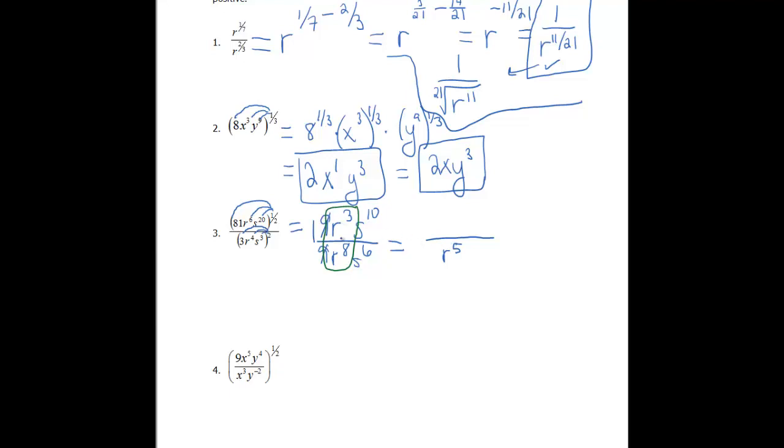If I subtract 3 minus 8, that gives me negative 5. So that means my r to the 5th is gonna have to go in the denominator. Now, for the s's, I've got an s to the 10th, and I've got an s to the 6th. My s to the 10th is in my numerator. That one's a lot bigger, so that means my s is gonna go in my numerator. And when I do 10 minus 6, that gives me a grand total of 4. So that's my final answer, s to the 4th over r to the 5th.